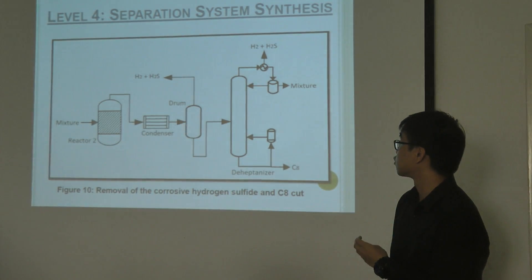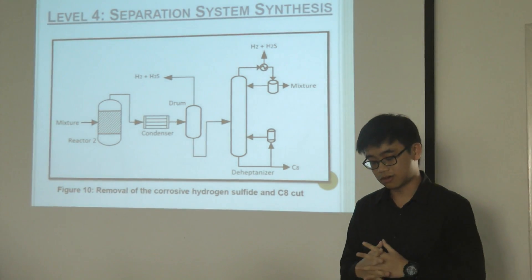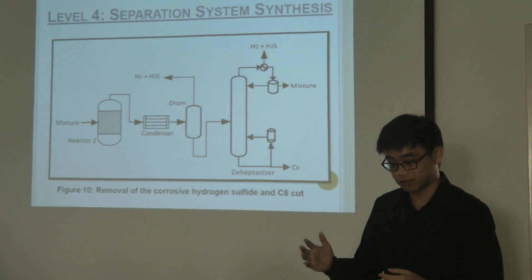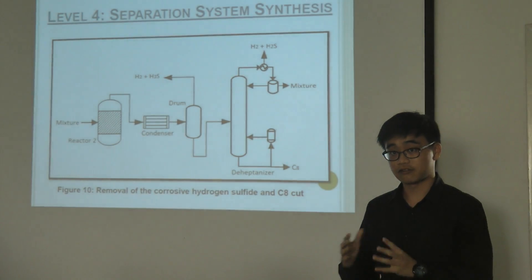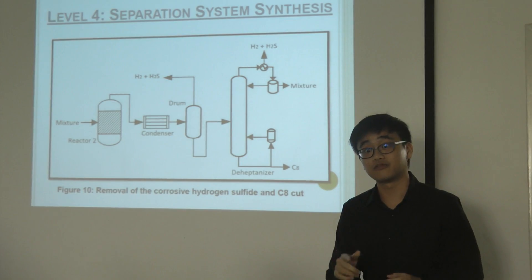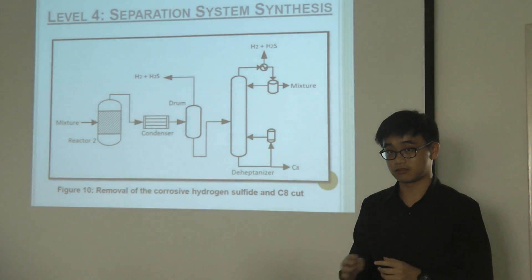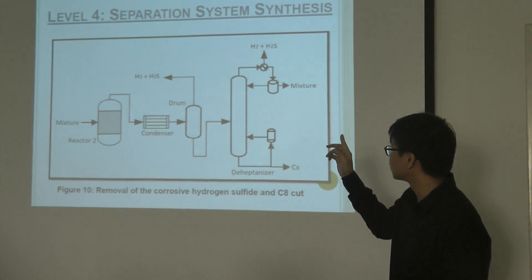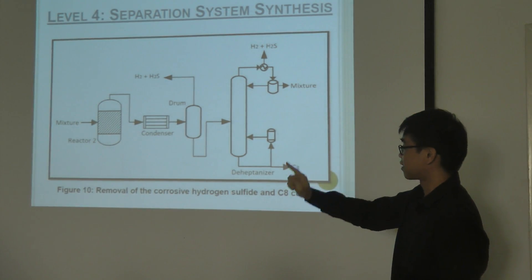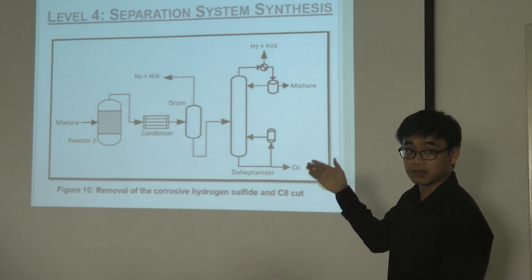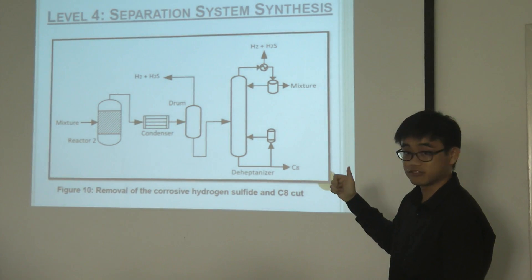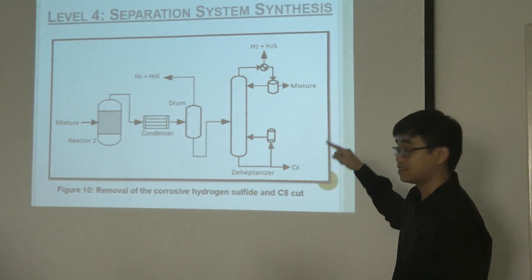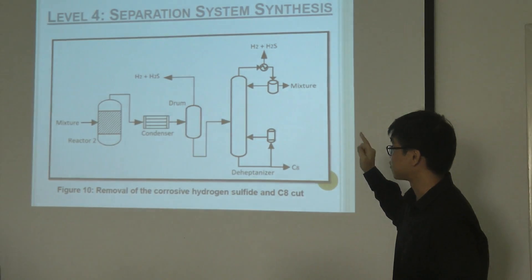The next step is removal of corrosive hydrogen sulfide and the C8 cut. According to the general rule, if there are any corrosive components, they must be removed as soon as possible. In the reactor, hydrogen is used to remove the organic sulfur present in the pyrolysis gasoline, forming hydrogen sulfide. Some hydrogen and hydrogen sulfide remain dissolved in the mixture after passing through the condenser. These are further removed in the de-heptanizer, using the same concept of a partial condenser.